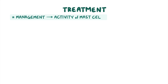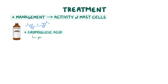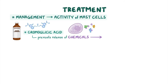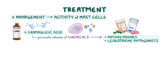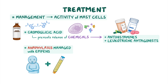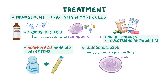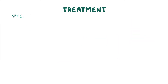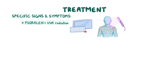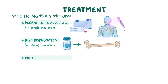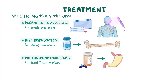Treatment for mastocytosis centers on management, particularly the activity of mast cells. Chromoglycic acid can be used to prevent the release of chemicals. But if chemicals are released, their effects can be dampened by medications like antihistamines or leukotriene antagonists. Anaphylaxis can be managed using EpiPens. In some cases, glucocorticoids may be used to reduce immune system activity. Specific signs and symptoms can be managed further; for example, psoralen plus ultraviolet A radiation, or PUVA, can treat skin lesions. Bisphosphonates can strengthen bones, and proton pump inhibitors can be used to treat the increased acid production in the stomach.